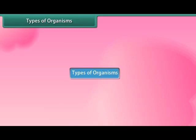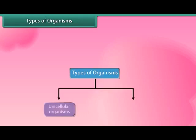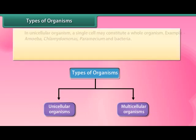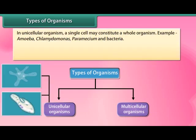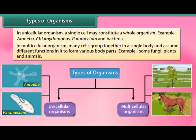There are two types of organisms: unicellular organisms and multicellular organisms. In unicellular organisms, a single cell may constitute a whole organism. Examples include amoeba, chlamydomonas, paramecium, and bacteria.